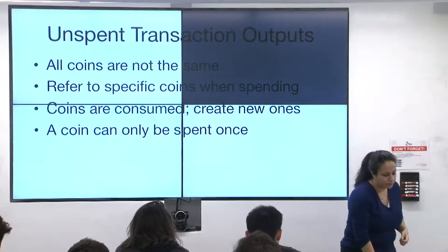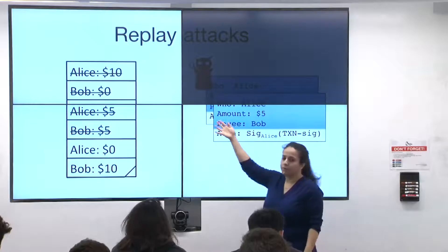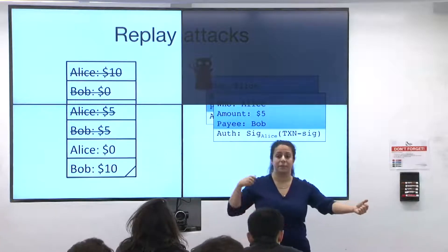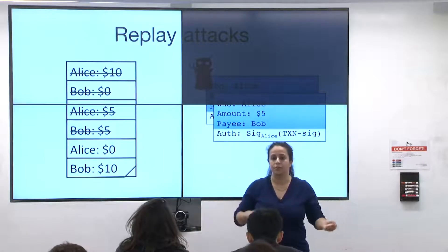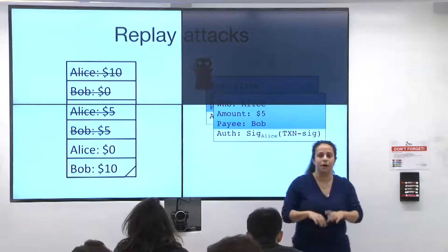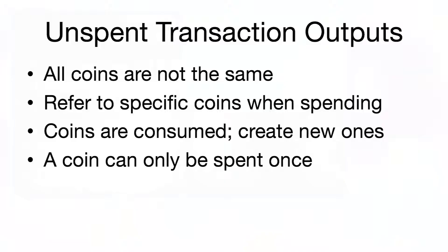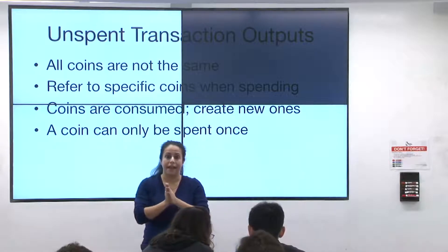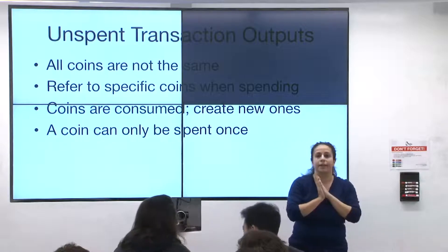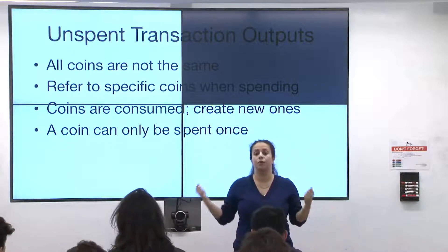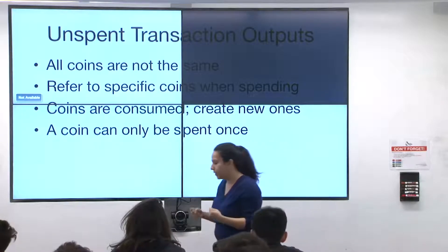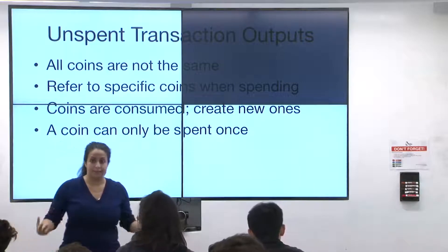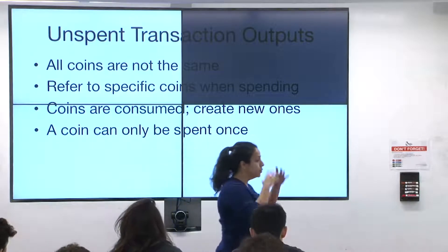In the account-based model, there's no notion of a specific coin — just amounts debited and credited. But Bitcoin is different: all coins are not the same. When you're spending, you don't just include an amount; you refer back to the specific coin you are spending. Coins in Bitcoin are created or consumed in every transaction. Whenever you spend Bitcoin, you have to spend it in its entirety — that Bitcoin is destroyed and new coins are created.